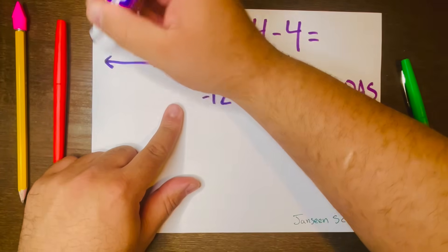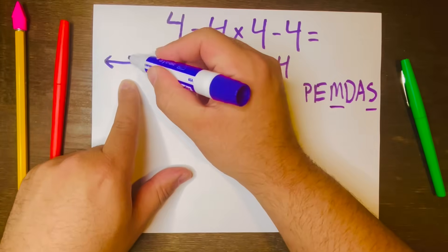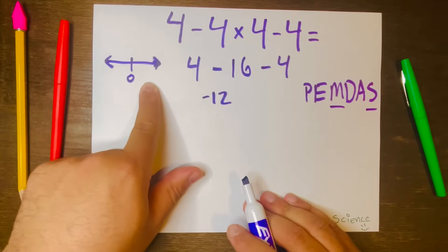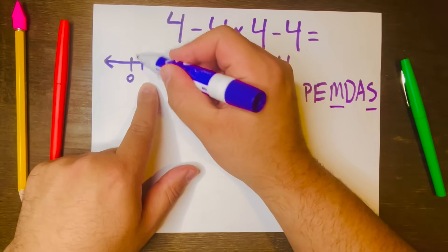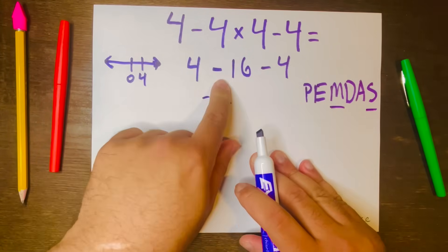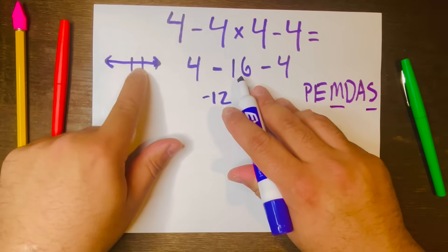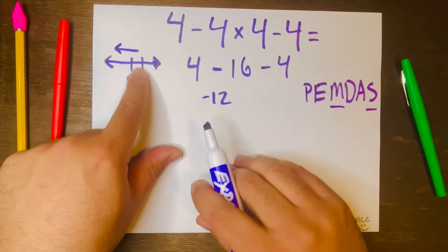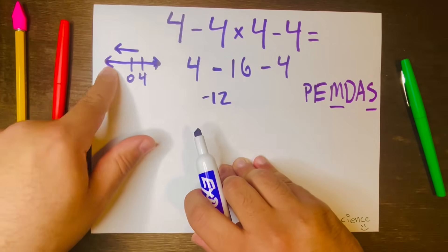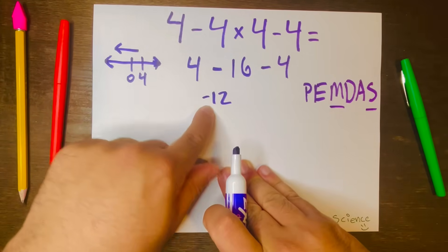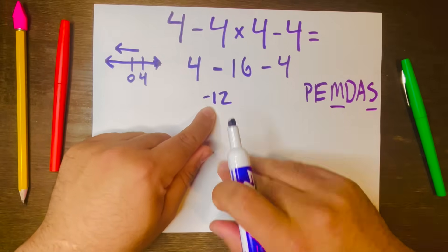number line: there goes 0, and you're at 4, and you need to go 16 units back. If you count 16 units, you'll land at negative 12.